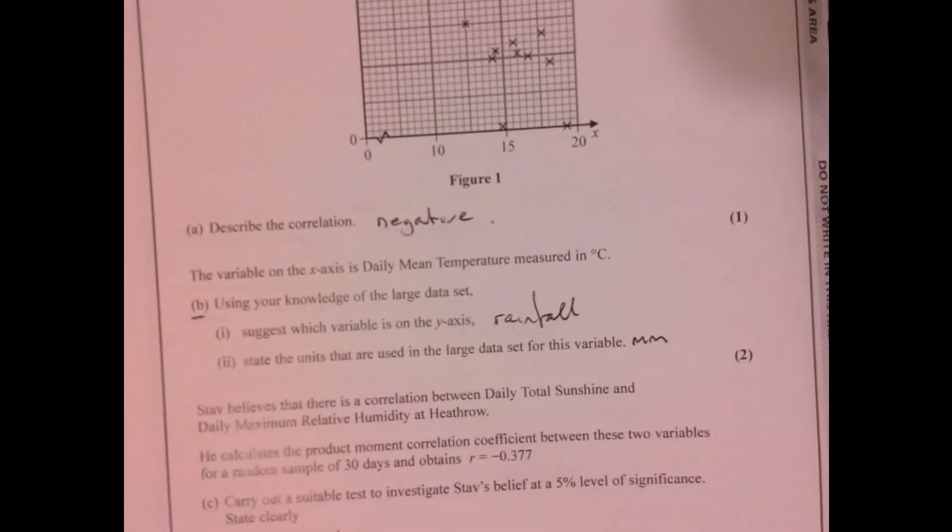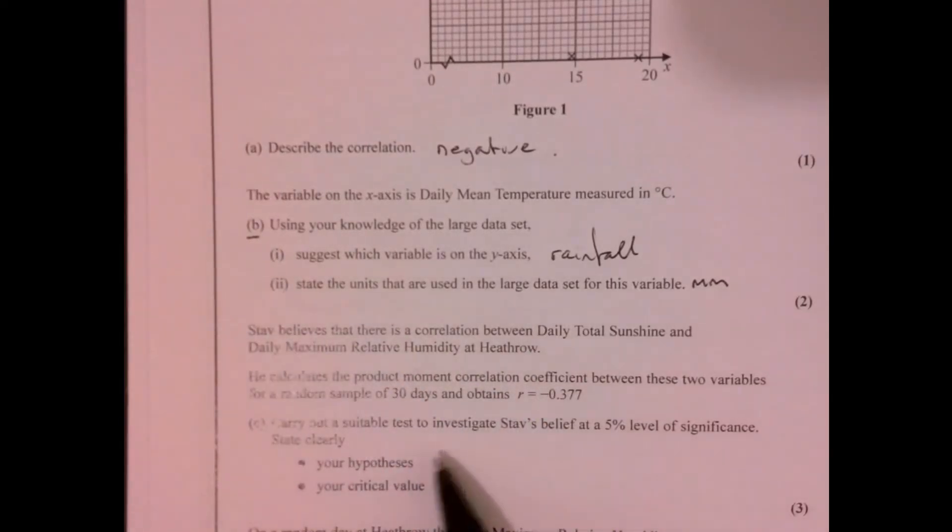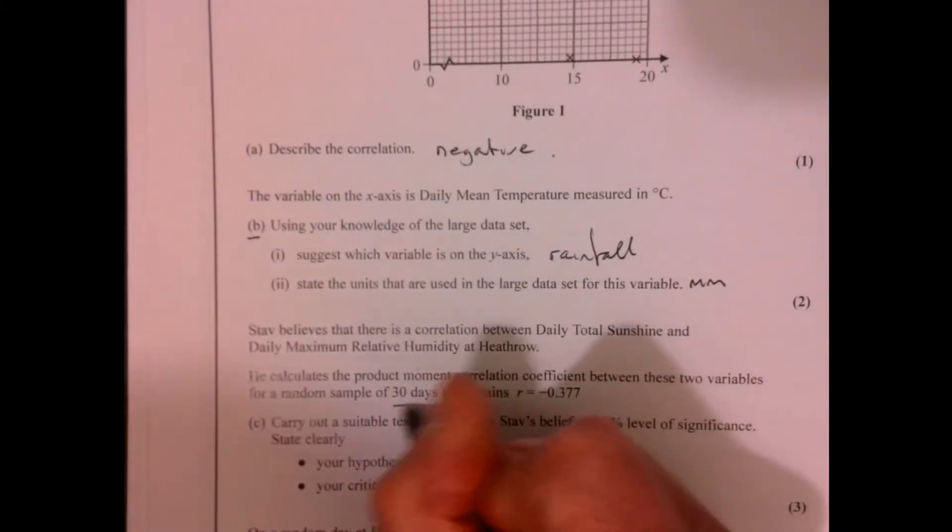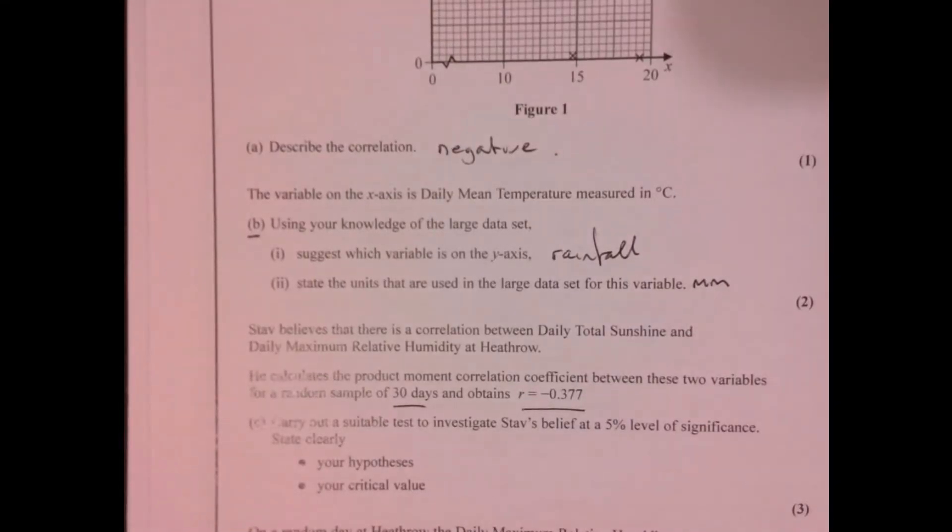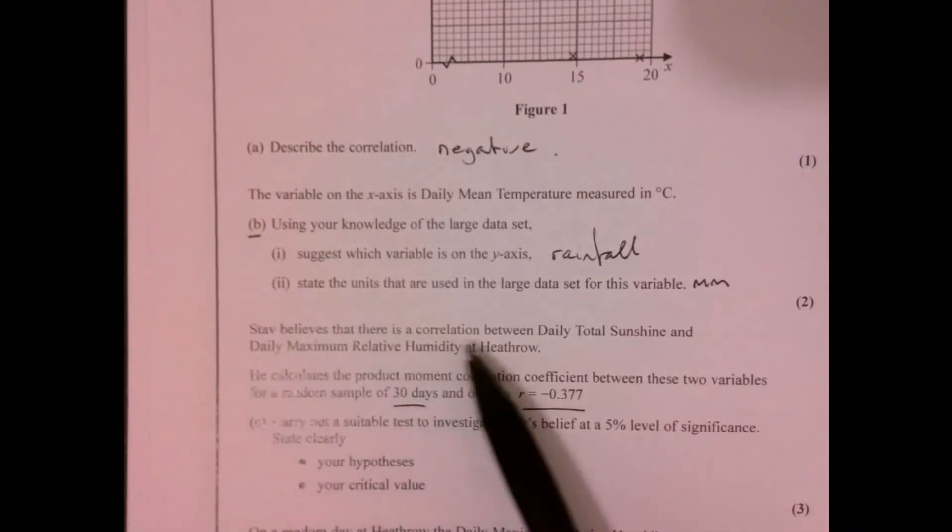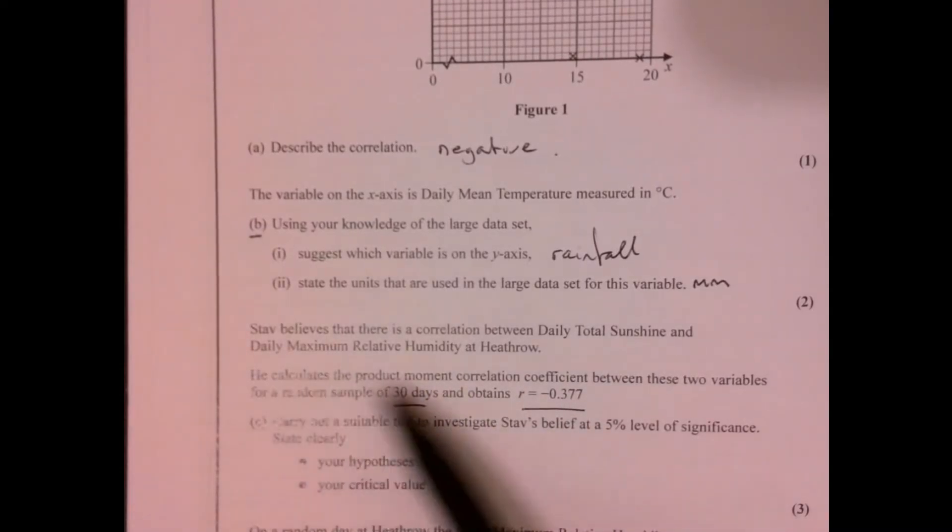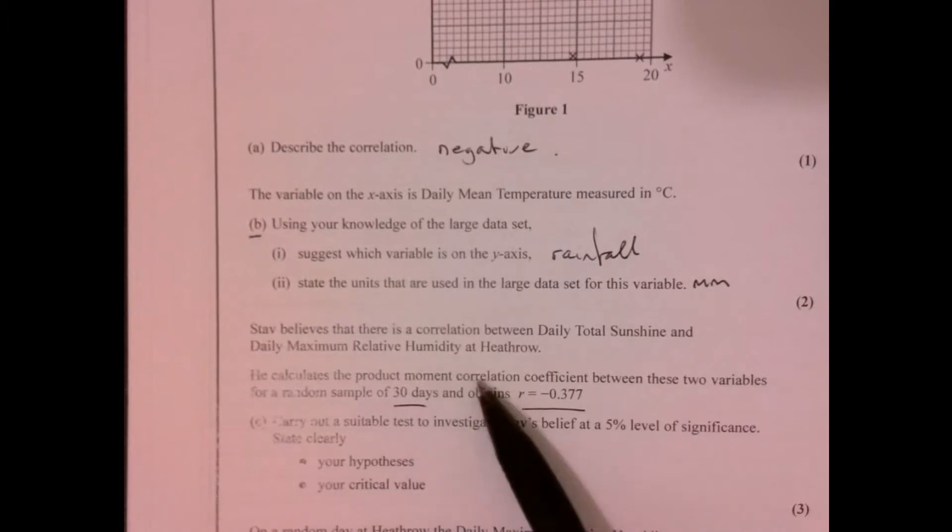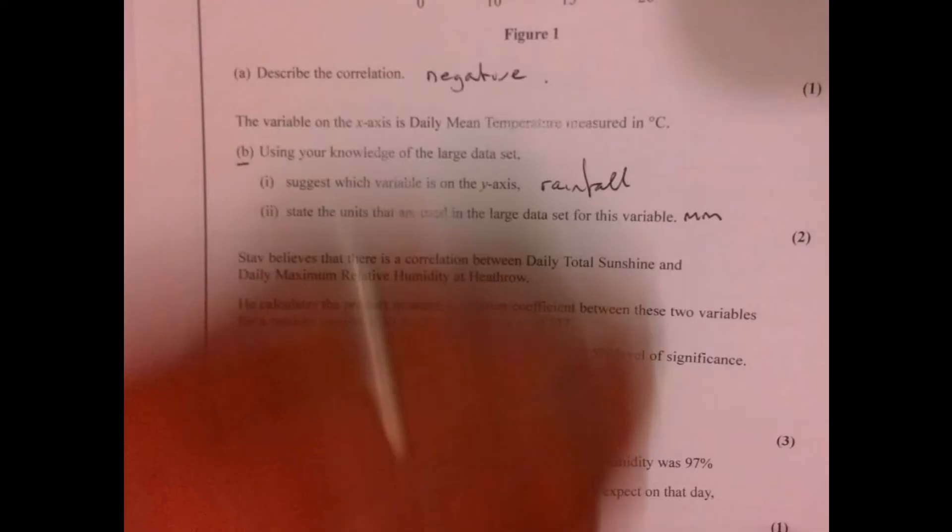Looking at part C, let's see what we're told. We've got to carry out some correlation testing. We've got n = 30 and we're given a correlation value. Stav believes there is a correlation between these two variables. He's calculated a product moment correlation coefficient, and we need to carry out a test to investigate his belief. Let's write down what we're told.